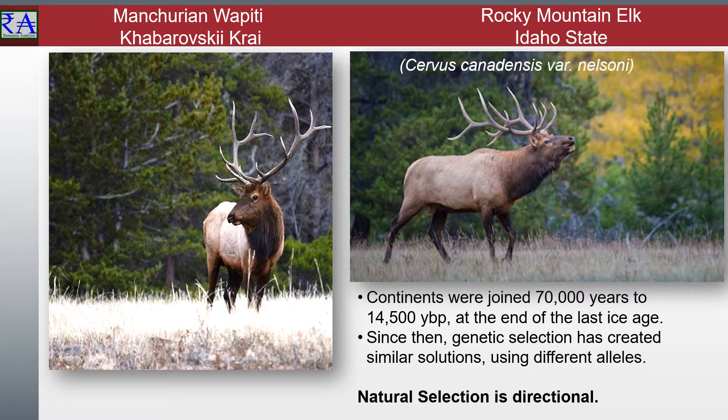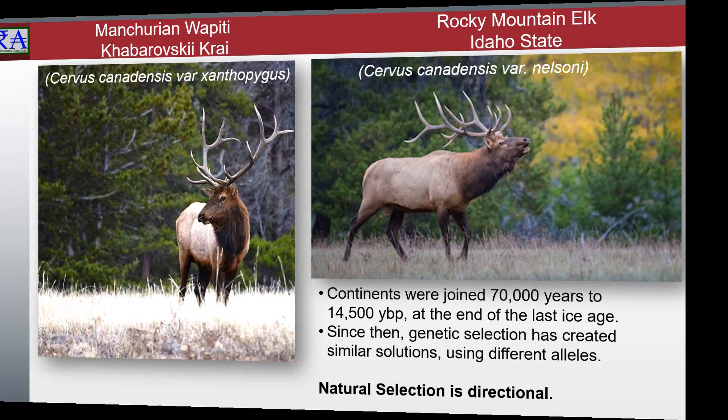Cervus canadensis variety Nelsoni is a species we now know as the Rocky Mountain elk, found in Washington and Idaho. Cervus canadensis variety Xanthopygus, known as Manchurian wapiti, is a subspecies of Cervus canadensis and native to Northeastern Asia. We begin this metapopulation journey to examine how population changes begin as a response to the environments where they live. Genetic adaptability reveals through adaptations.